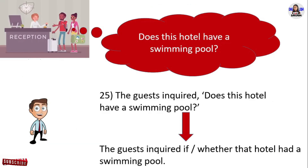Next example: 'Does this hotel have a swimming pool?' The guests inquired 'Does this hotel have a swimming pool?' in direct speech. In reported speech, the guests inquired if that hotel had a swimming pool. This is a yes/no question — remember to use 'if' or 'whether' before the reported question; you can use only one of them. 'Does have' in present simple changes into 'had' in past simple.